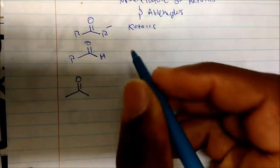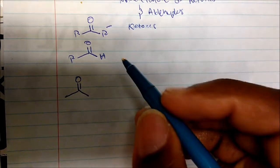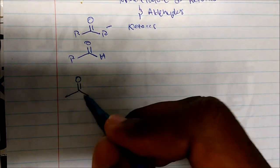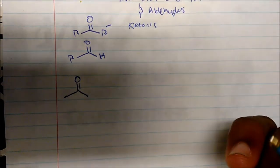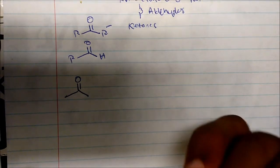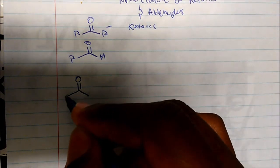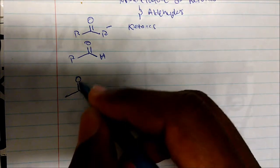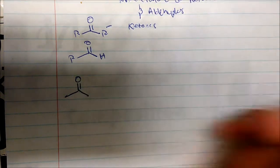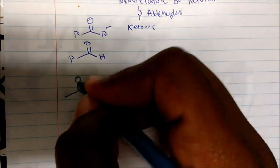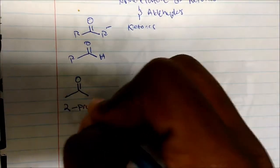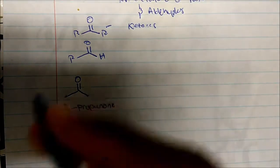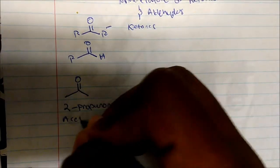What is the IUPAC name for this compound? I have one, two, three — so my longest carbon chain is three, so this is propanone. If it were an alkane we'd say propane, but because we have this ketone or carbonyl group, it's propanone. The carbonyl group is located on carbon 2, so this is 2-propanone. The common name for this is acetone.